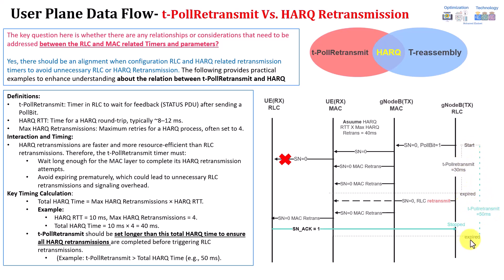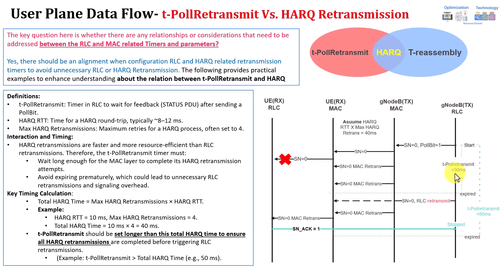Instead of expiring earlier, the timer will now expire further down. So in this case, you will allow the third HARQ attempt to be completed. The retransmission will be successful and the data is transferred from the MAC-RLC successfully. There is an acknowledgement, so you don't need to go to the second RLC retransmission because HARQ already covered that. The takeaway is that T-Poll Retransmit should be greater than the MAC retransmission round-trip time to ensure HARQ is not interrupted by the RLC, and to ensure all HARQ processes complete.